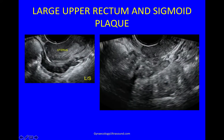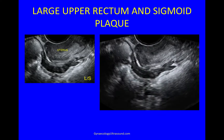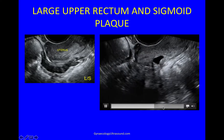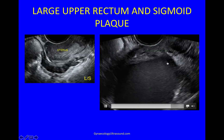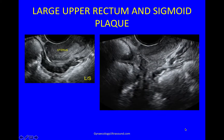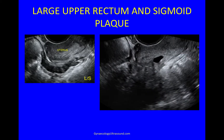Here there's a uterus with a very large plaque of endometriosis affecting the upper rectum and the sigmoid. There's the uterus and there comes this really thick dark plaque of DIE, and the huge ovarian endometrioma are all attached to one another. So this is upper rectum and sigmoid.